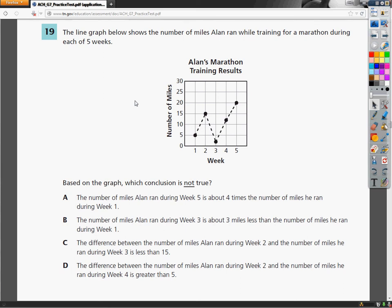This is the TCAP practice test for grade 7, the math section, question number 19. The line graph below shows the number of miles Alan ran while training for a marathon during each of five weeks. Based on the graph, which conclusion is not true?